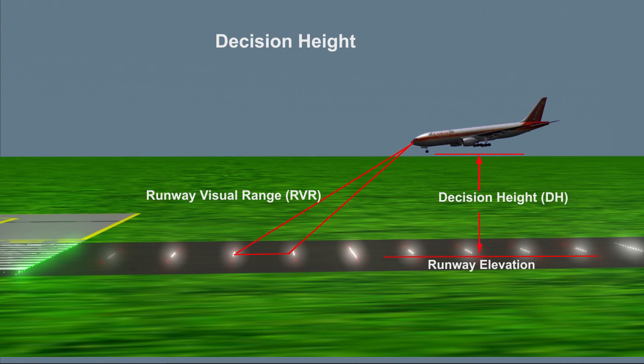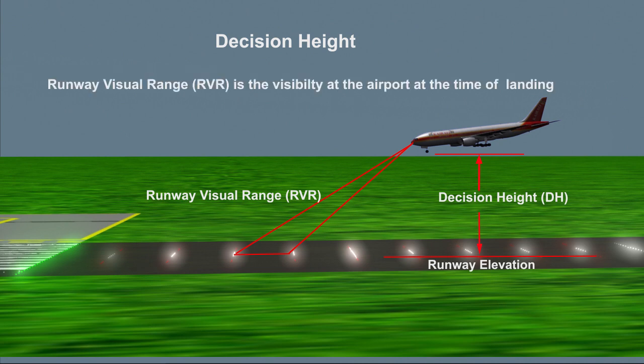Decision height can be seen here as the distance between the runway elevation and the aircraft. RVR value is the runway visibility at the time of landing.